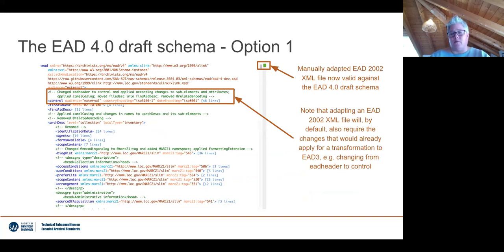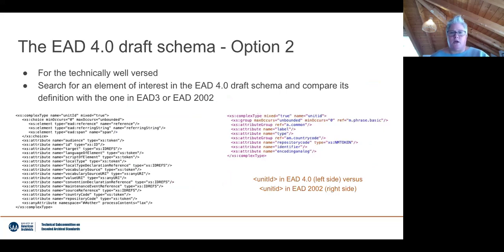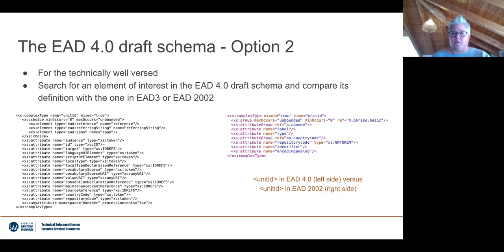One note: if you're starting from an EAD 2002 file, you will also need to apply all the changes that already apply when moving from EAD 2002 to EAD 3 — for example, the change from EAD header to control and updating all the sub-elements accordingly. The second option to engage via the schema is more technical: take the EAD 4.0 schema and place it next to either the EAD 3 or EAD 2002 schema and do a side-by-side comparison of element attributes and content models.